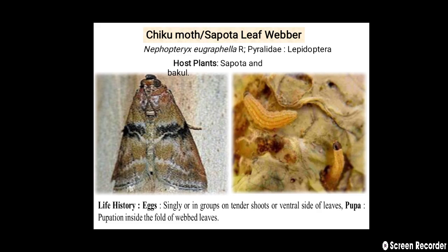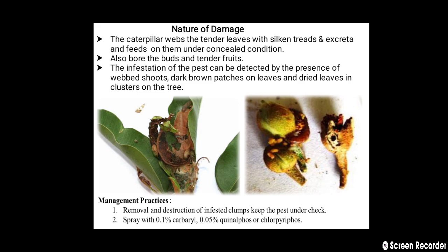Here you can see the adult moth as well as the larva of the Sapota leaf webber. The caterpillar webs the tender leaves with silken threads and excreta and feeds on them under concealed conditions. Also feeds on buds and tender shoots. The infestation can be detected by the presence of webbed shoots, dark brown patches on the leaves, and dried leaves in clusters on the tree.